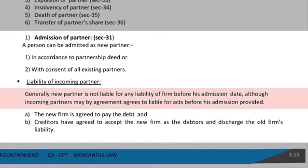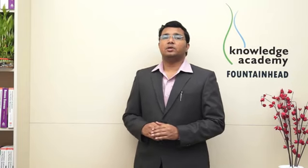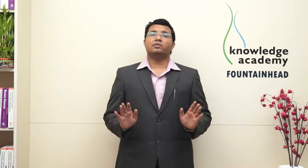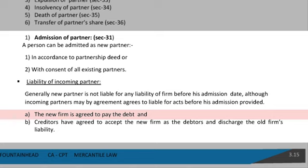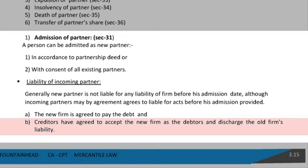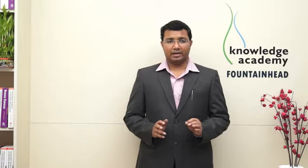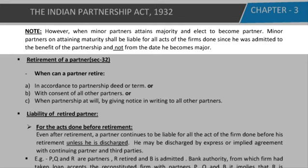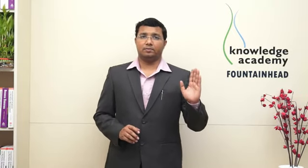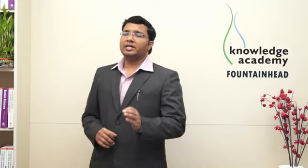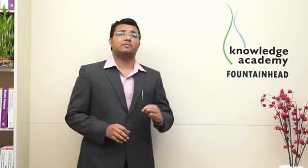Although, an incoming partner may by agreement agree to be liable for acts before his admission — if it is written that 'my liability will start from 2010,' then liability starts from 2010. Also, if the new firm agrees to pay the debt, and creditors agree to accept the new firm as debtor and discharge the old firm's liability, that is also possible. Importantly, when a minor partner attains majority and elects to become a full partner, he shall be liable for all acts of the firm since he was admitted to the benefit of partnership — not from the date he becomes major. For example, if admitted at age 16, liability starts from 16, not from 18.